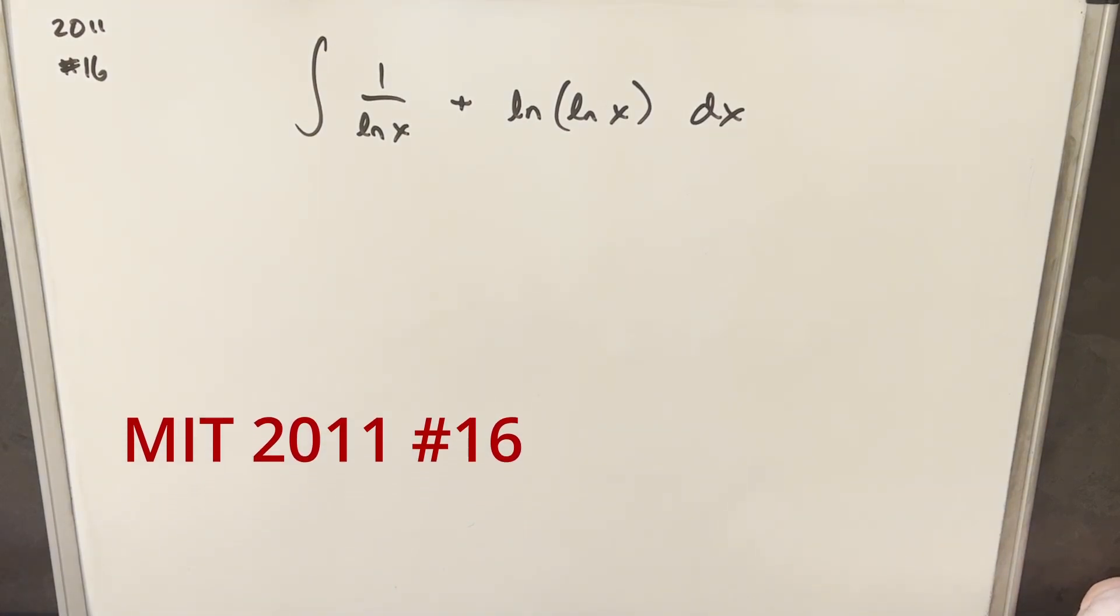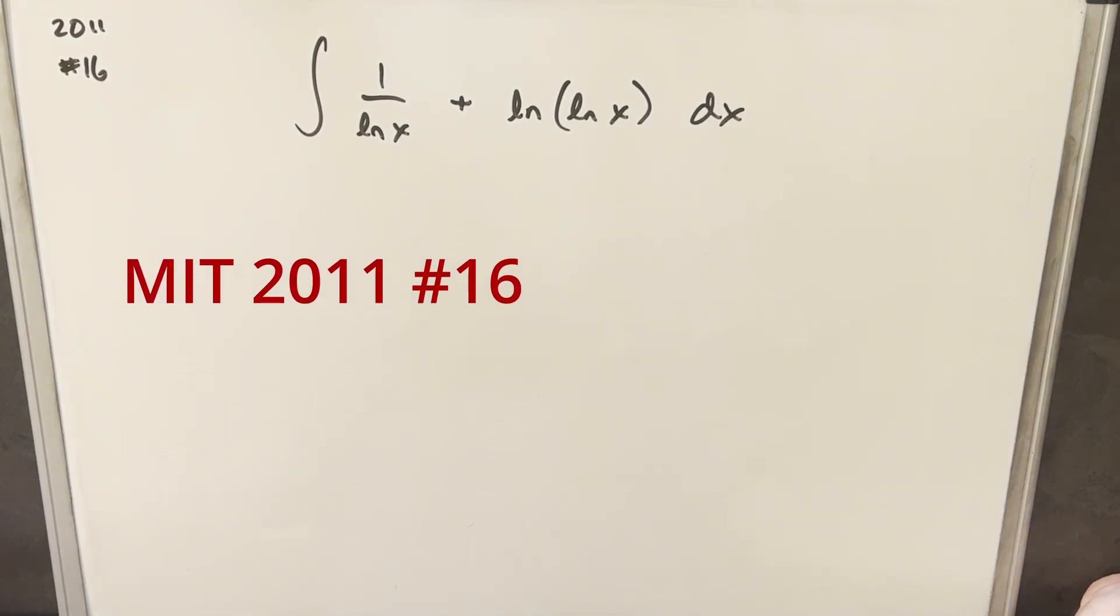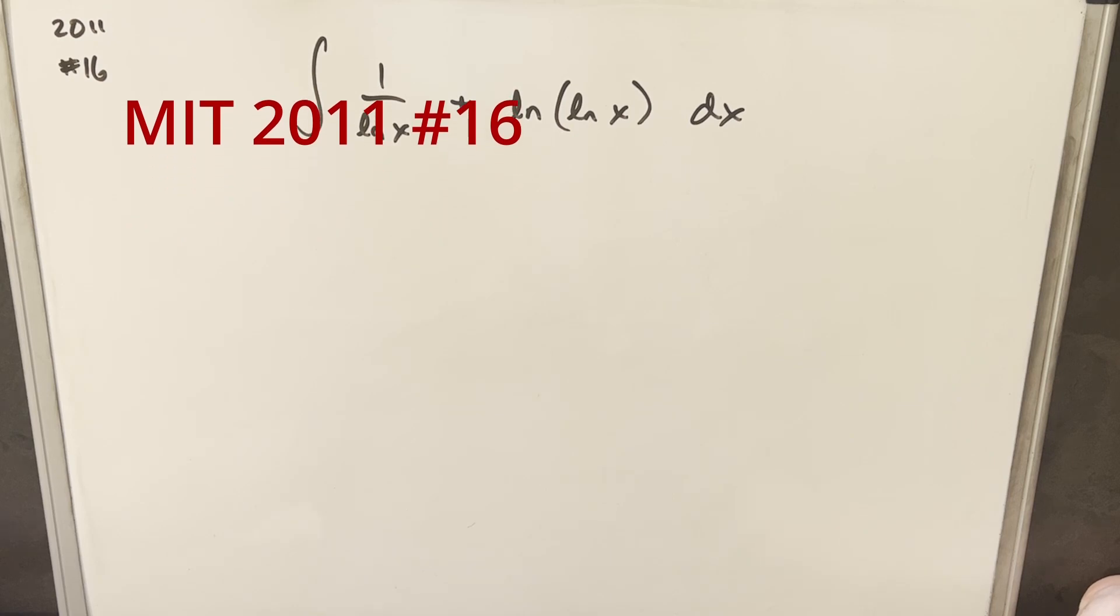Hey, we have here today an integral from MIT Integration B2011, problem 16. We have the integral of 1 over lnx plus ln of lnx dx.